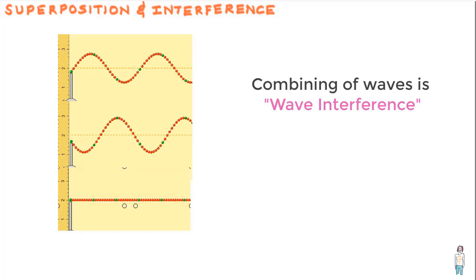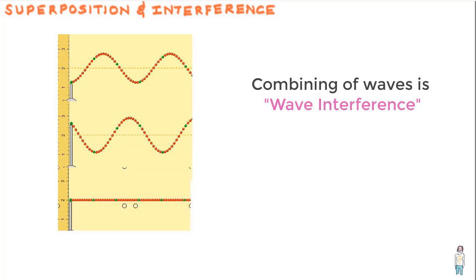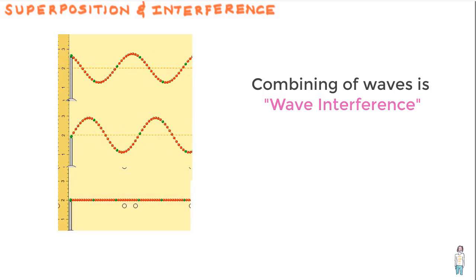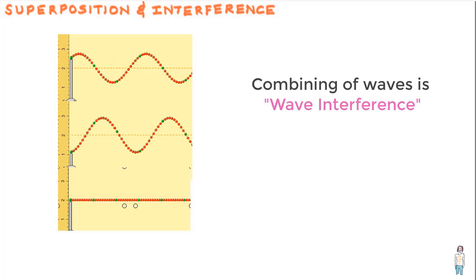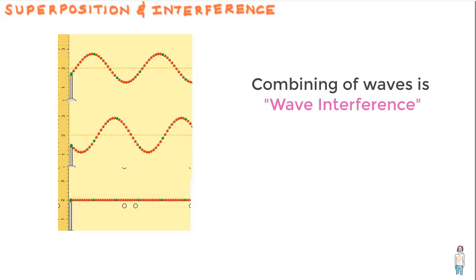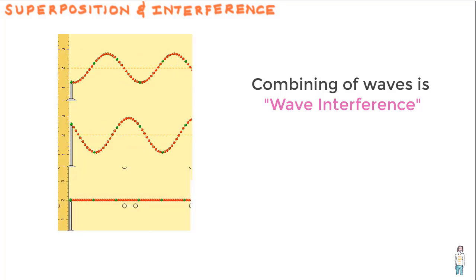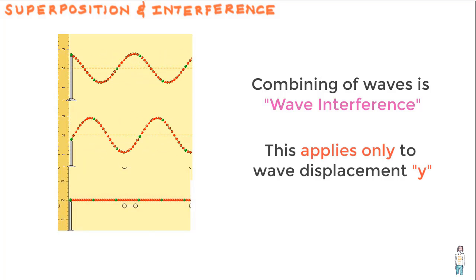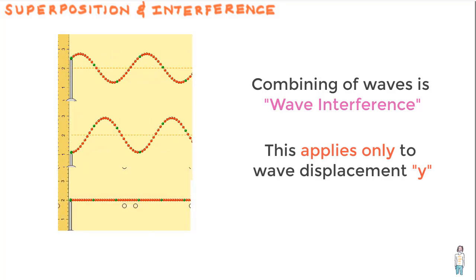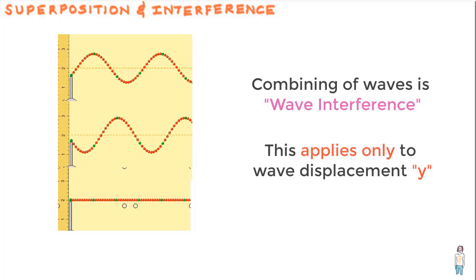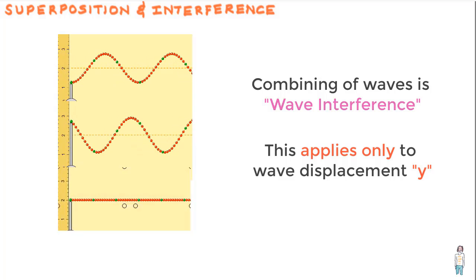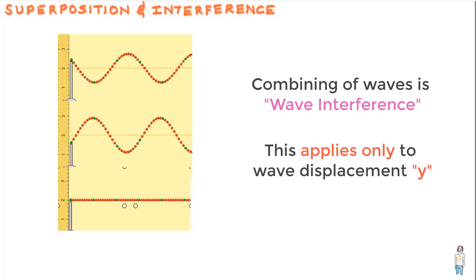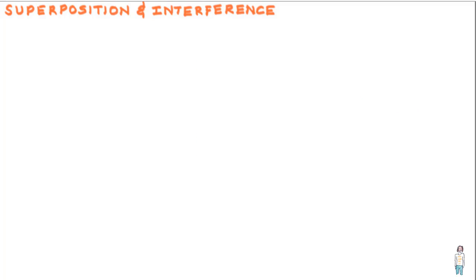This combining of waves is what physicists call wave interference, and the waves are said to interfere. Note that these terms refer only to the wave displacements — the travel of the wave is pretty much unaffected.